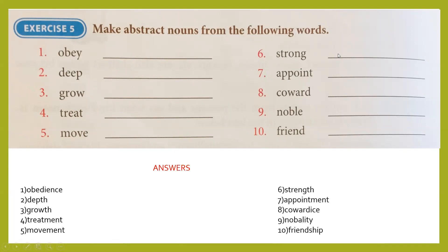Continuing: number 6, strong — strength. Number 7, appoint — appointment. Number 8, coward — cowardice. Number 9, noble — nobility. Number 10, friend — friendship. Here is a helpful clue: imagine the word 'my' before each word and say it aloud. My obey becomes my obedience, my deep becomes my depth, my grow becomes my growth, my treat becomes my treatment, my move becomes my movement, my strong becomes my strength, my appoint becomes my appointment. Use this clue when you have to make nouns. Take a screenshot and write the answers in your workbook with pen.